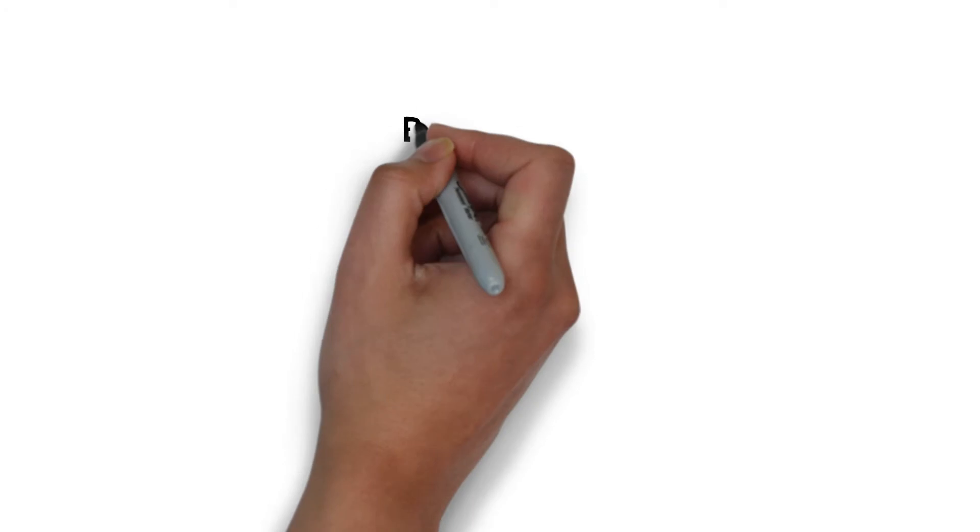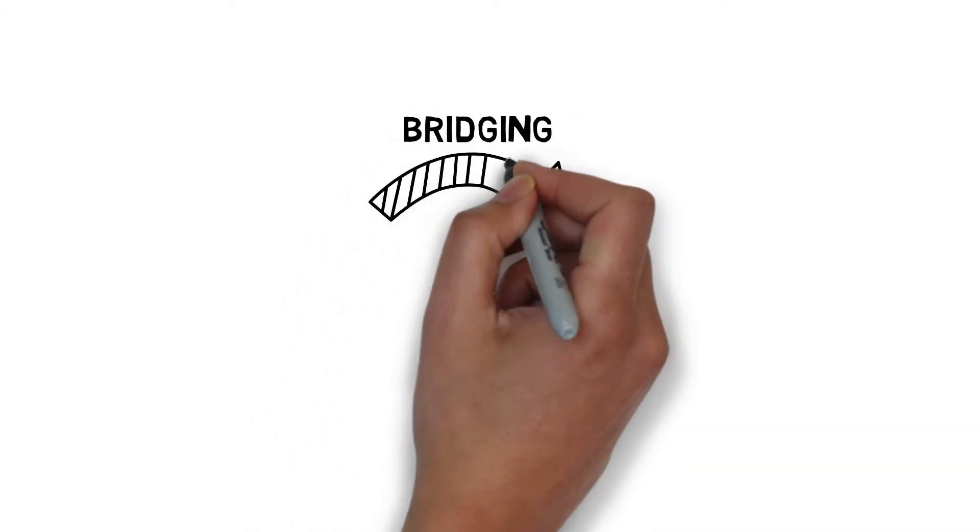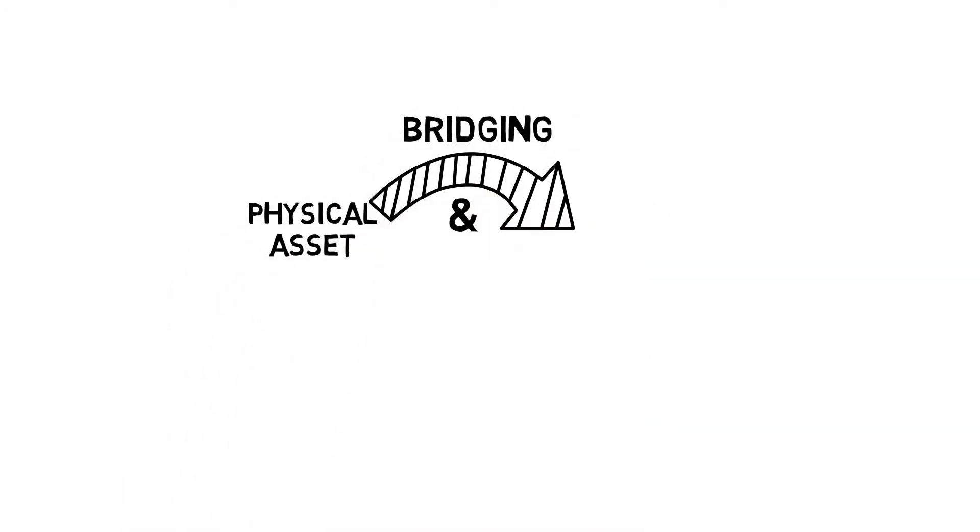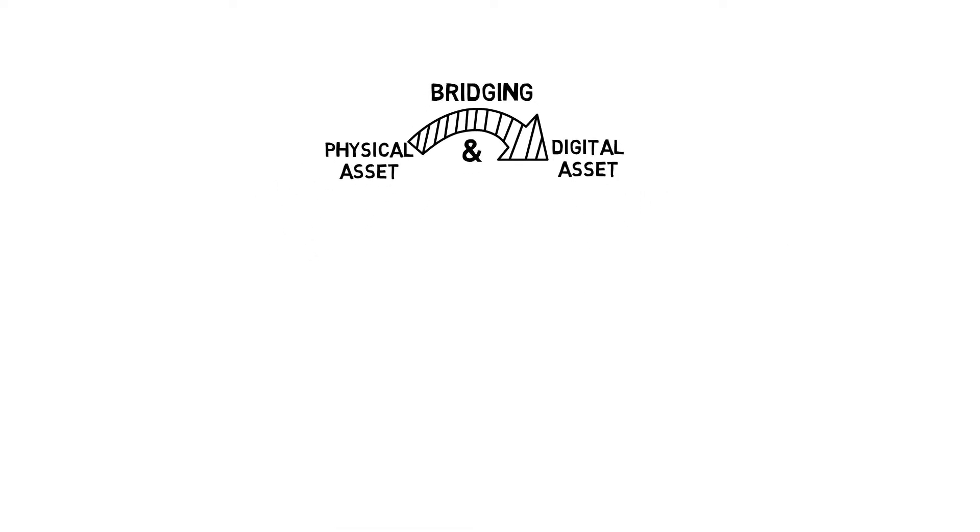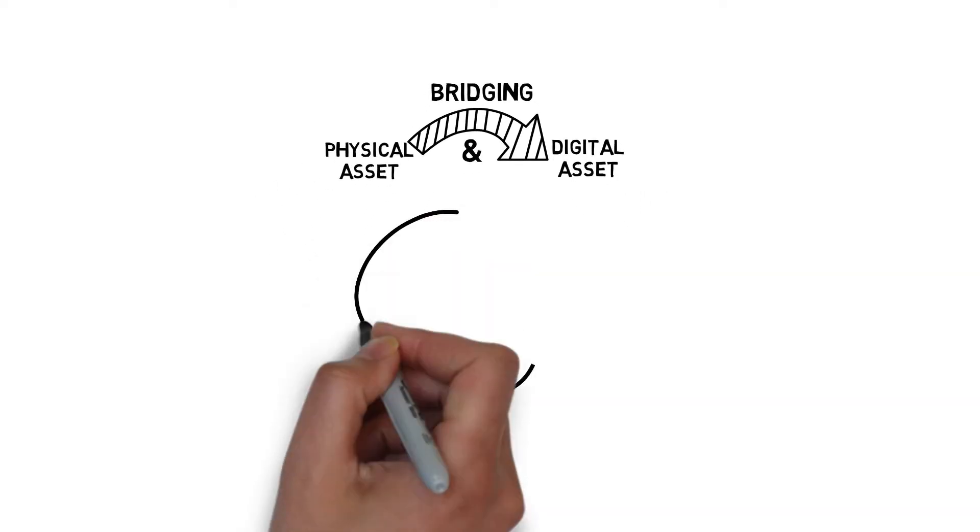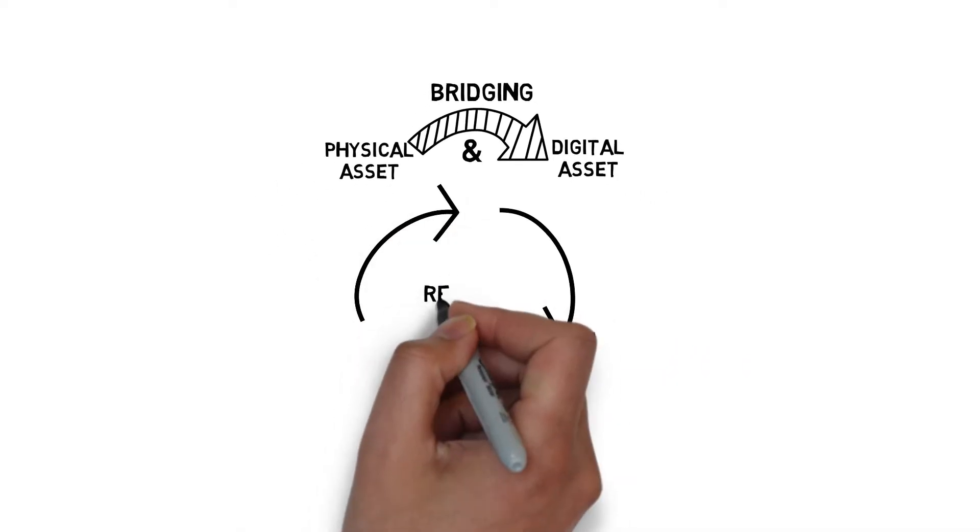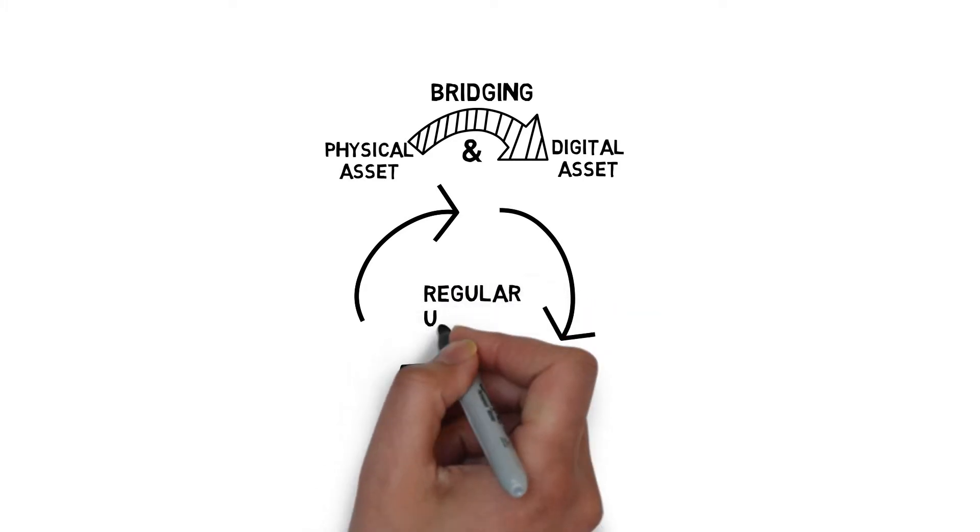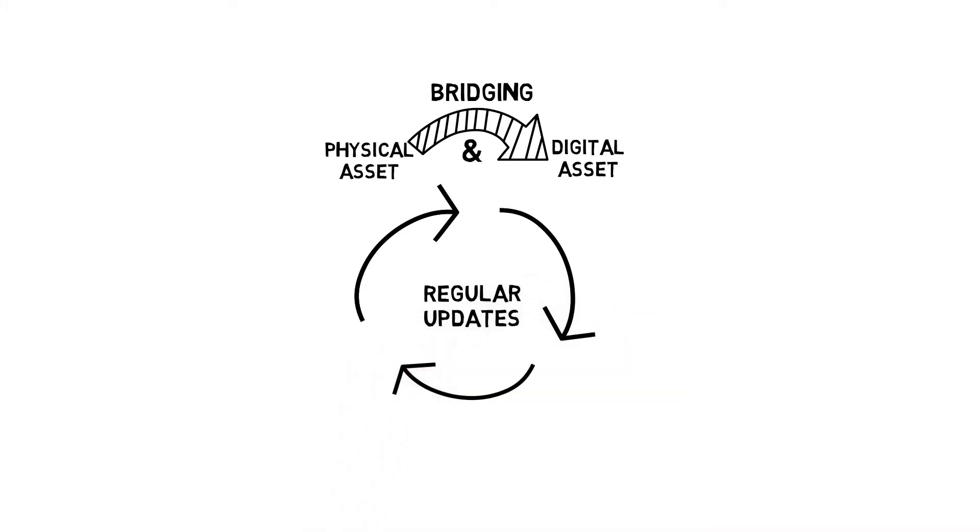We refer to this as bridging the digital and physical asset. Maintaining the accuracy of the asset inventory is vital. It's important to adopt a process complete with regular updates to the digital assets to ensure they stay synchronized with their real world counterparts.